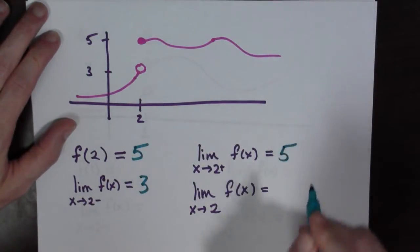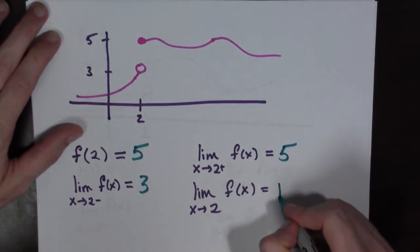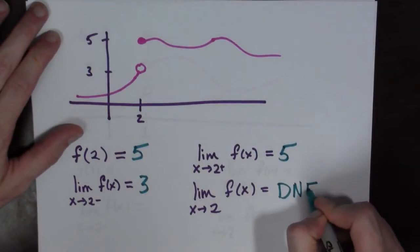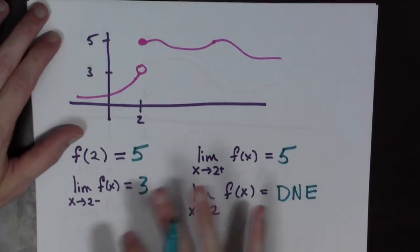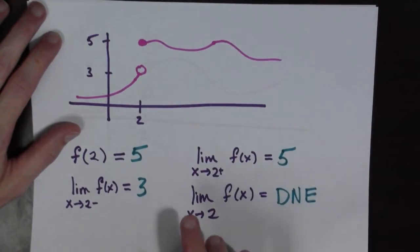Well, that looks like it's 5. And what's the limit of f of x as x goes to 2? Well, this does not exist. This is a very common sort of problem for limits from the left and limits from the right.